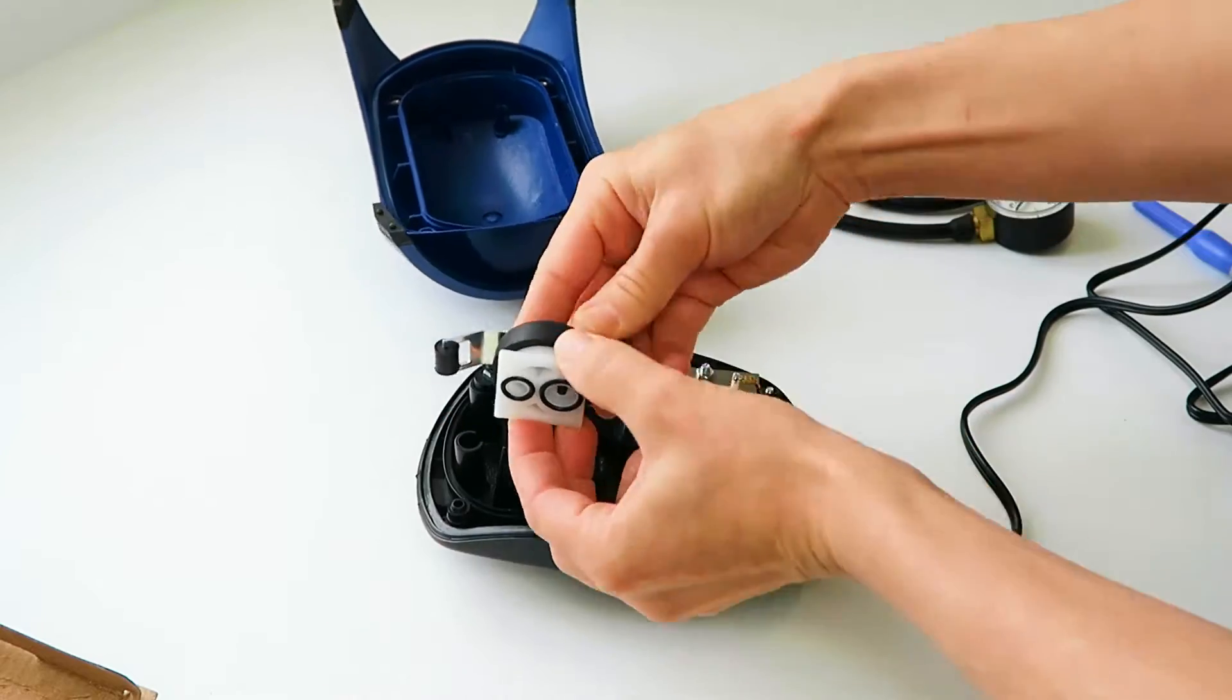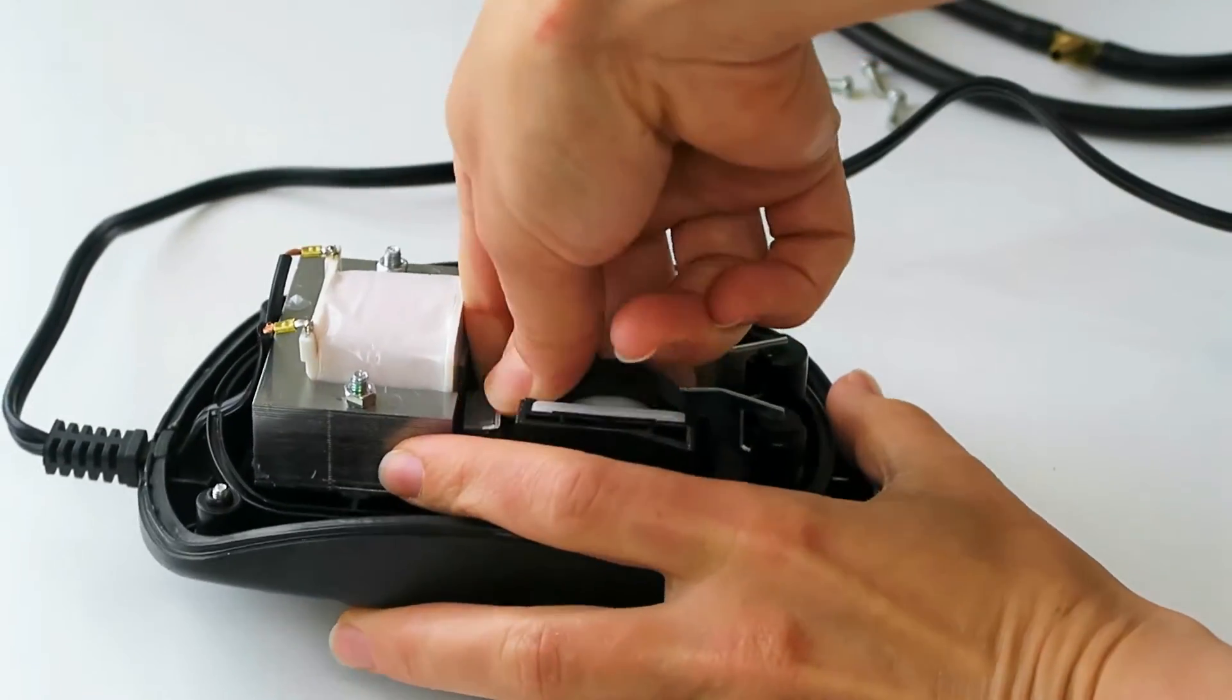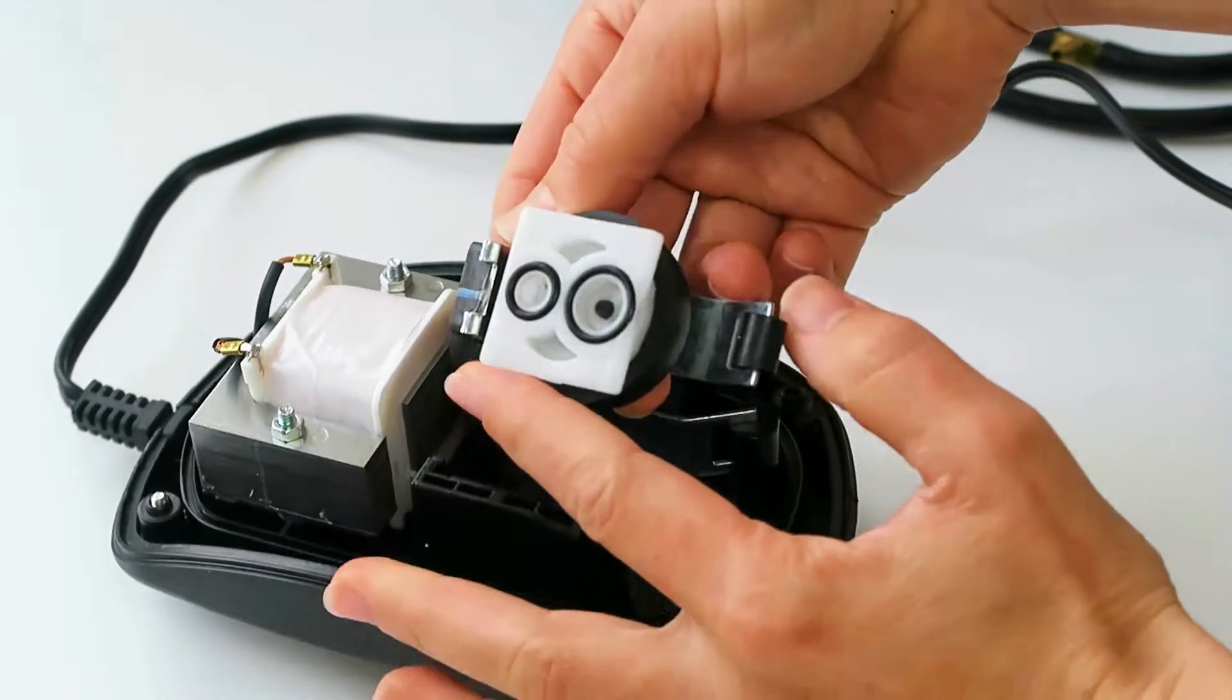Carefully remove the bellows and flip the valve 180 degrees. Repeat this for the other side.